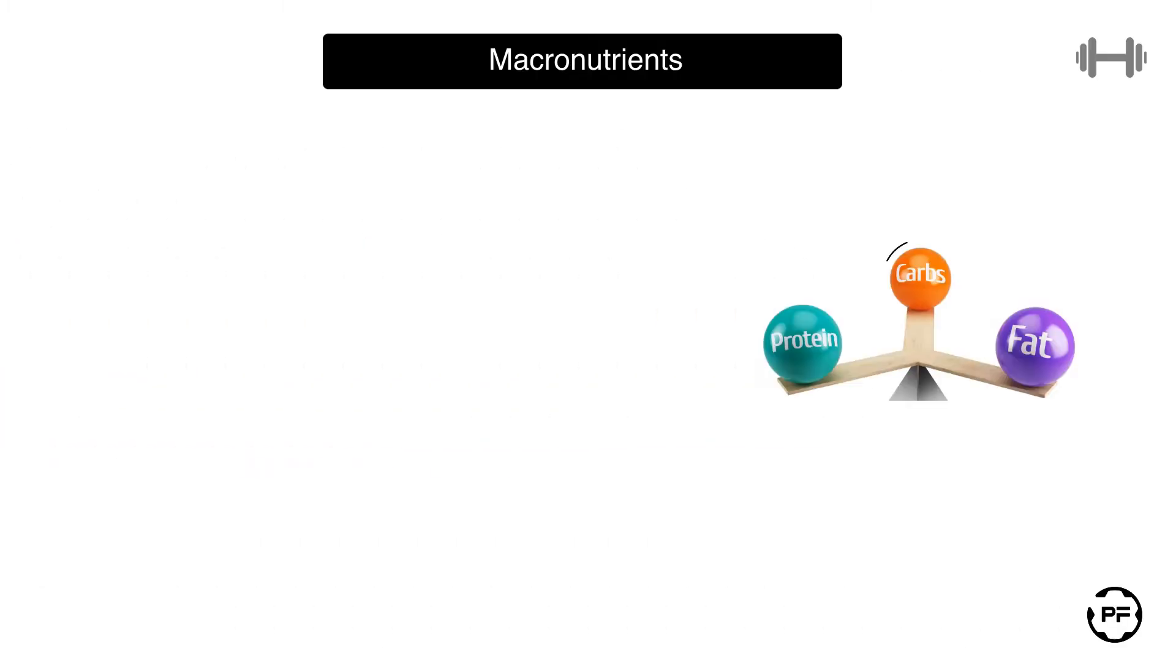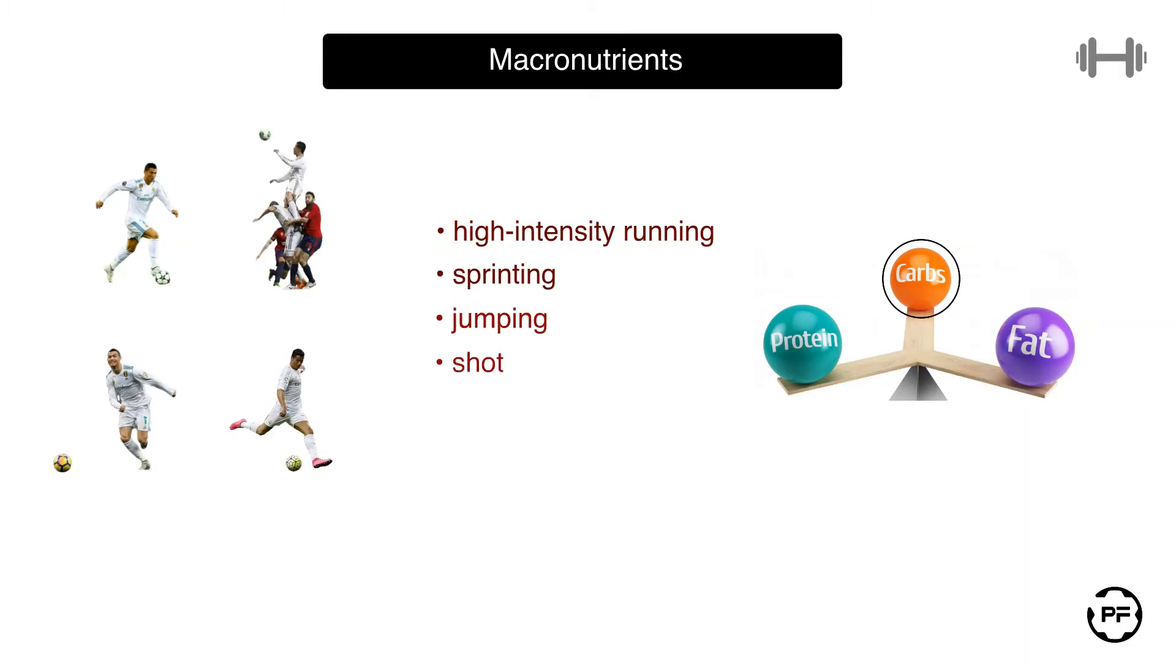The energy obtained from carbohydrates is a special energy and allows us to easily sustain such powerful actions as high-intensity running, sprinting, jumping, and shots on goal.